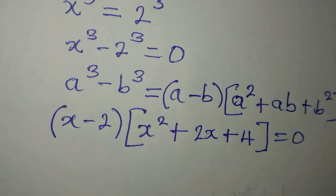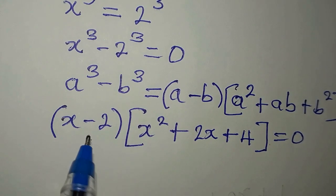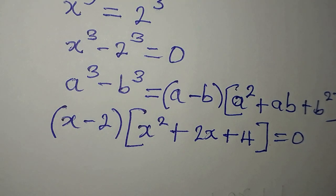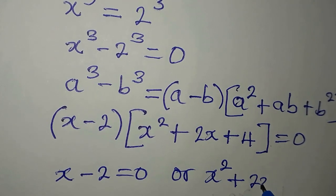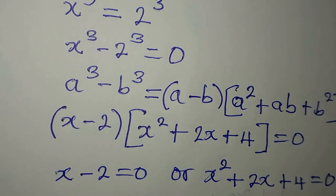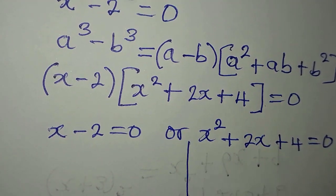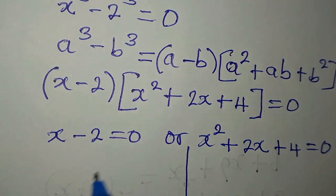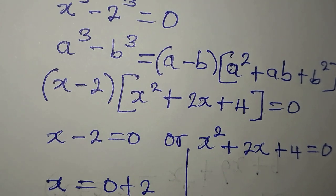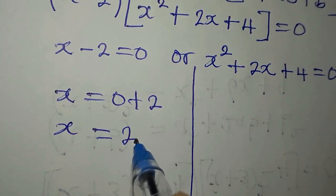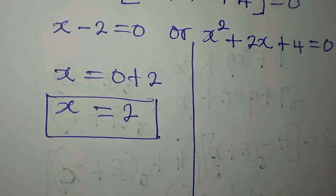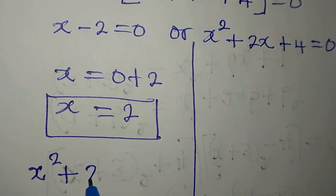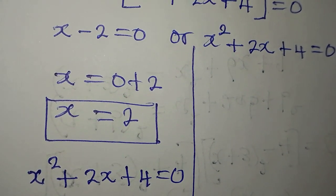We have two factors now. Since we are multiplying both of them to get 0, it means that either of them or both must be equal to 0. So we have x minus 2 equals 0 or x squared plus 2x plus 4 equals 0. From here, our x will be 0 plus 2, meaning that x equals 2. So here we have the real solution to the problem. But we have to solve completely, so I have to pick from this equation and solve x squared plus 2x plus 4 equals 0.